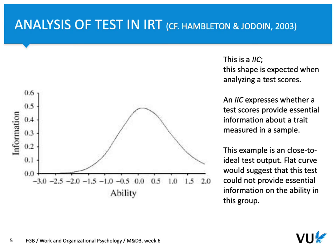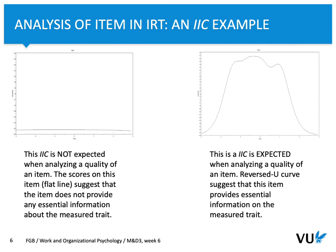On the left-hand side you have an IIC that is not expected when analyzing the quality of an item — because this curve is flat, it does not provide essential information about the measured trait. On the right-hand side you have an IIC that is expected — the reversed U curve suggests that this item provides essential information on the measured trait. The reversed U shape informs us that this specific item measures a trait well.